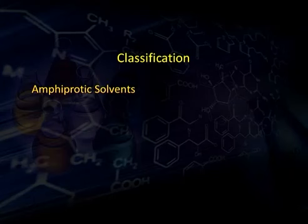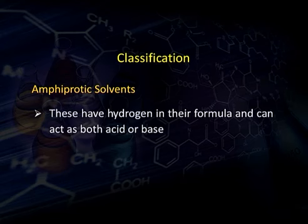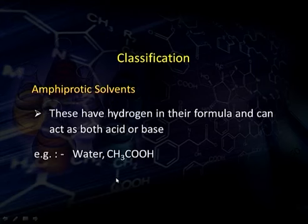Amphiprotic solvents, also called amphoteric solvents, have hydrogen in their formula and can act as both acids or bases depending on conditions. Examples include water (H₂O) and acetic acid — both contain hydrogen and can behave as either acid or base depending on the conditions.